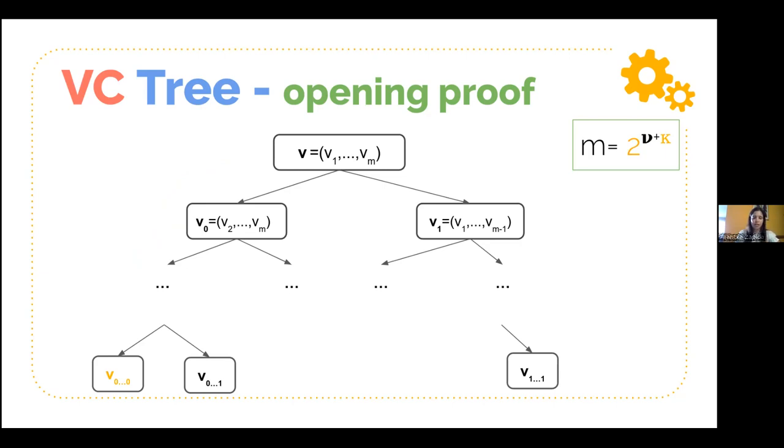And then when you have to perform a proof of opening, you just go through a process that is linear on the size of your small chunks, in this case, two to the kappa.